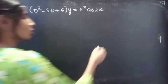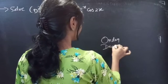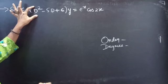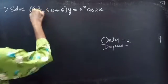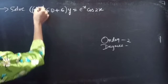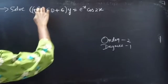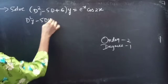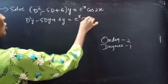Firstly, let's find the order and degree of the given differential equation. Identify the highest derivative here — D² is the highest derivative, so our order will be 2. The highest power of the highest derivative is 1, so the degree is 1. We can write the given differential equation as D²y - 5Dy + 6y = e^x cos2x.